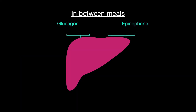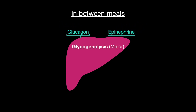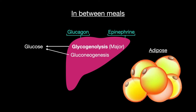When you're fasting in between meals, glucagon and epinephrine will call upon the liver to undergo glycogenolysis as the main source of energy. Gluconeogenesis in the liver will also occur, along with the release of free fatty acids from the adipose tissue for aerobic oxidative phosphorylation.